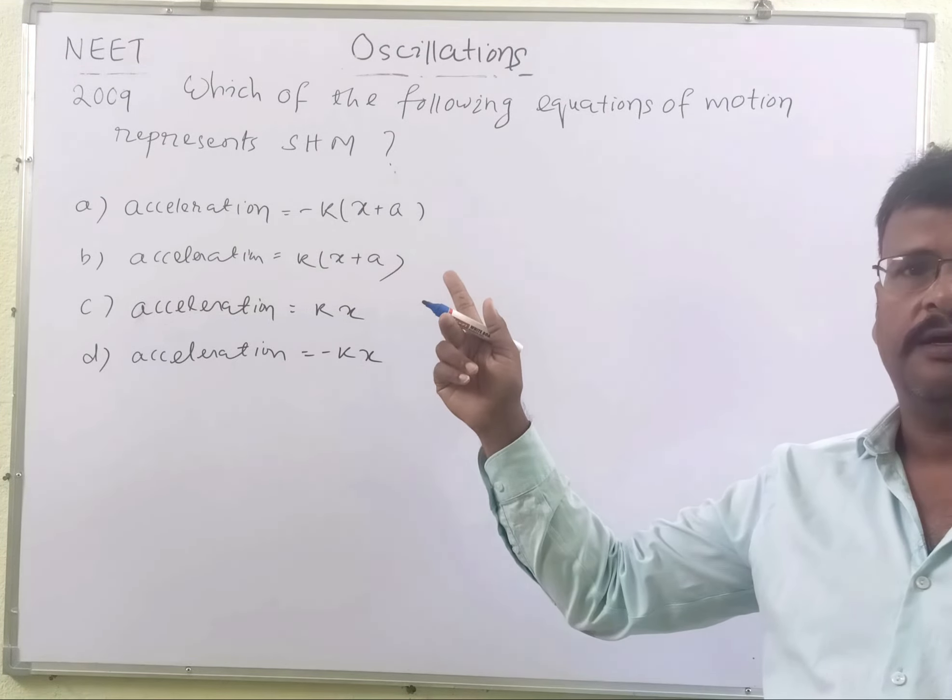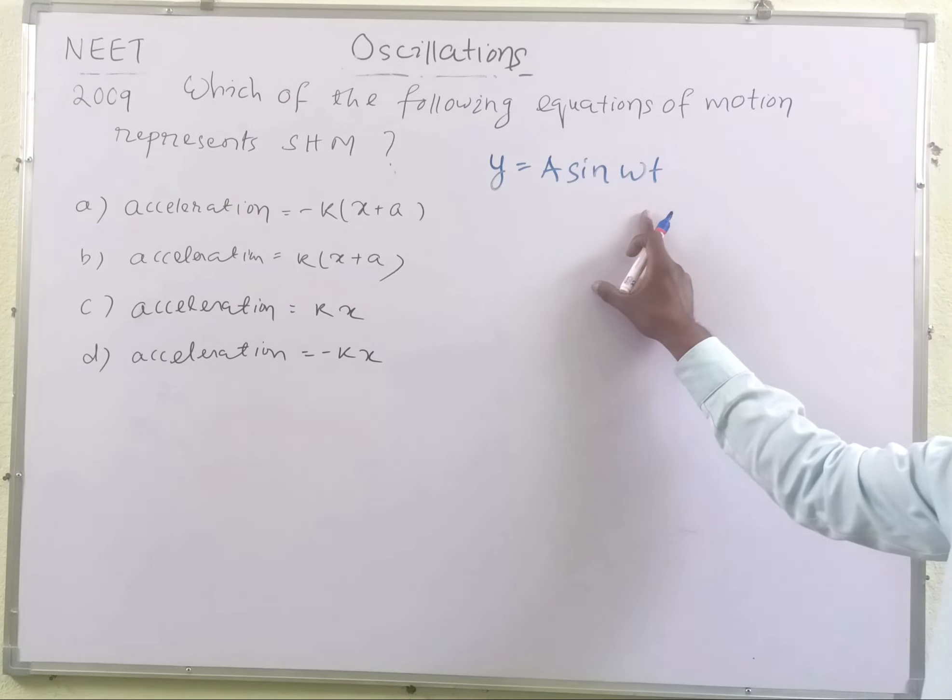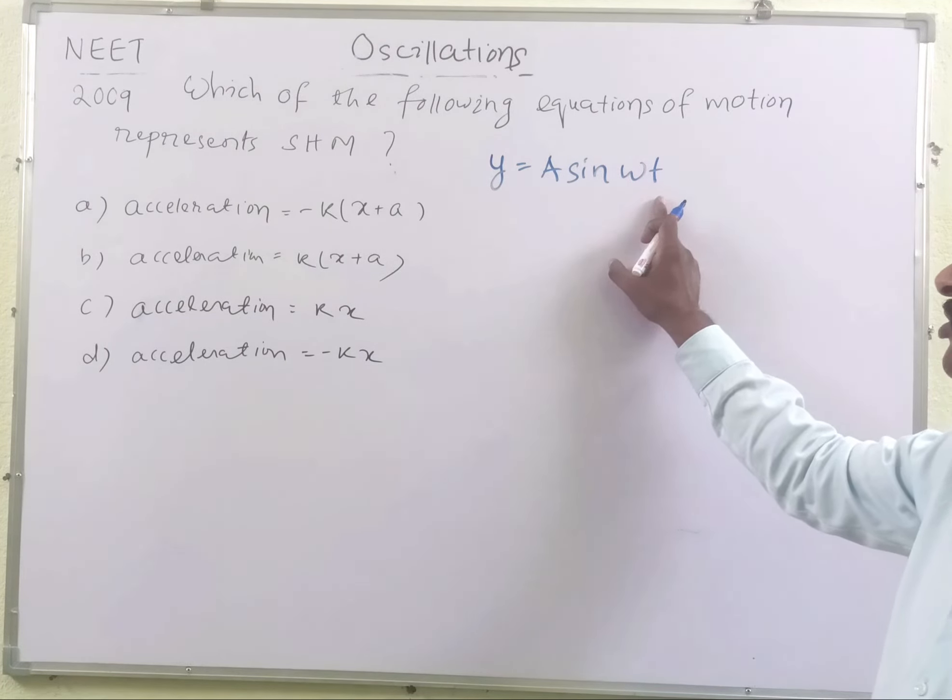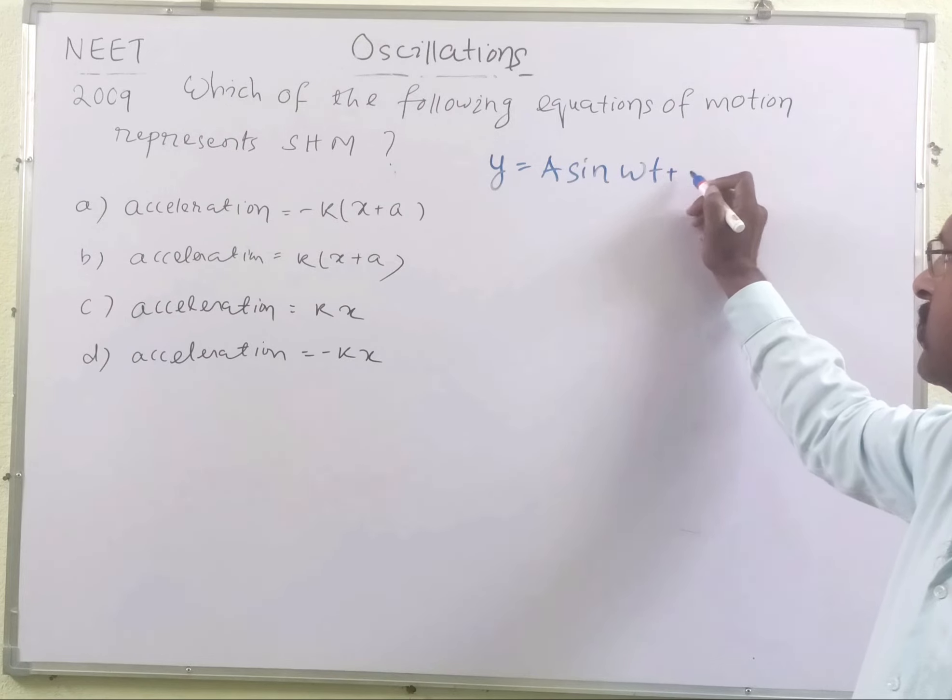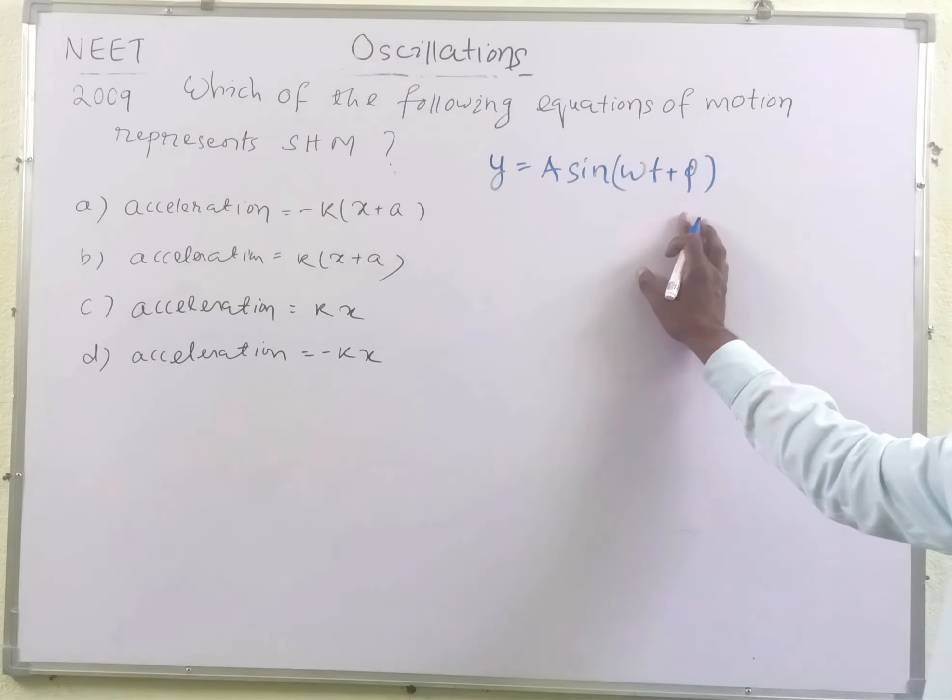The equation of motion of a simple harmonic motion is written as y = A sin(ωt), or this may be written as A sin(ωt + φ). If the phase angle is zero, this can be written as y = A sin(ωt), where y is the displacement from the mean position, A is the amplitude, ω is the angular frequency equal to 2π/T, where T is the time period of oscillation.